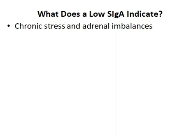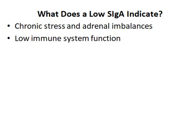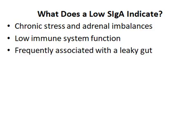A low secretory IGA can be a result of chronic stress and adrenal imbalances as well as low immune system function. And while secretory IGA isn't a specific marker for determining if someone has a leaky gut, a low secretory IGA is usually associated with a leaky gut, although it's important to understand that a normal secretory IGA does not rule out a leaky gut.